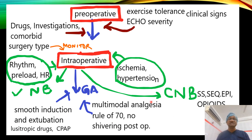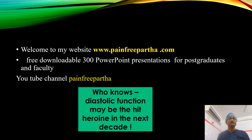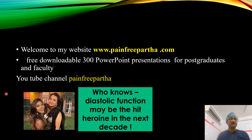In summary: use lusitropic drugs and CPAP postoperatively as needed. The rule of 70, smooth induction, and smooth extubation are the key principles. Thank you - now you know diastolic function.